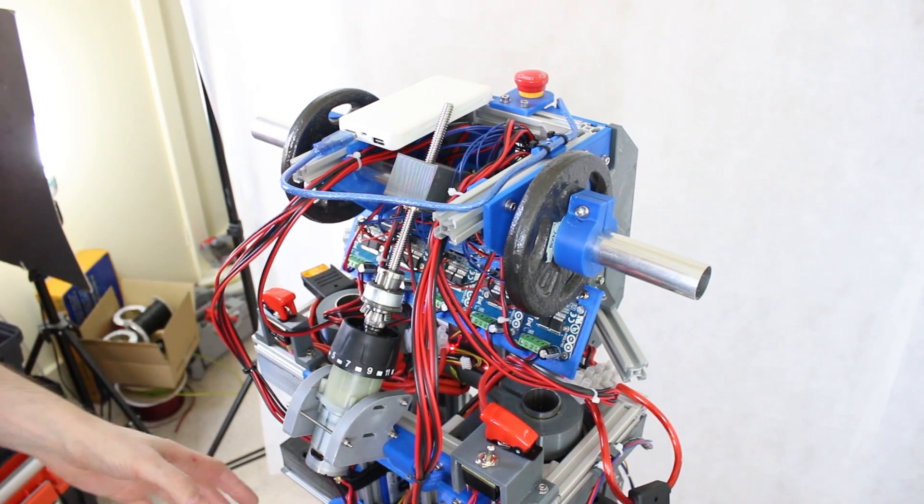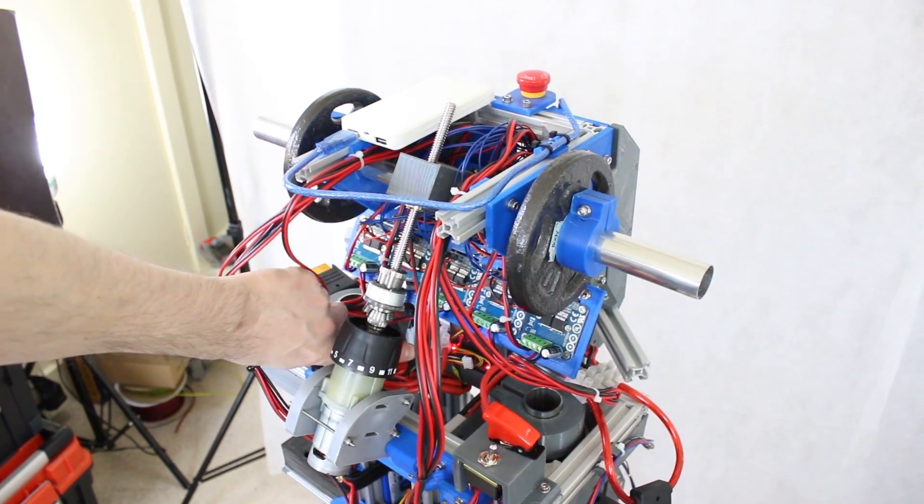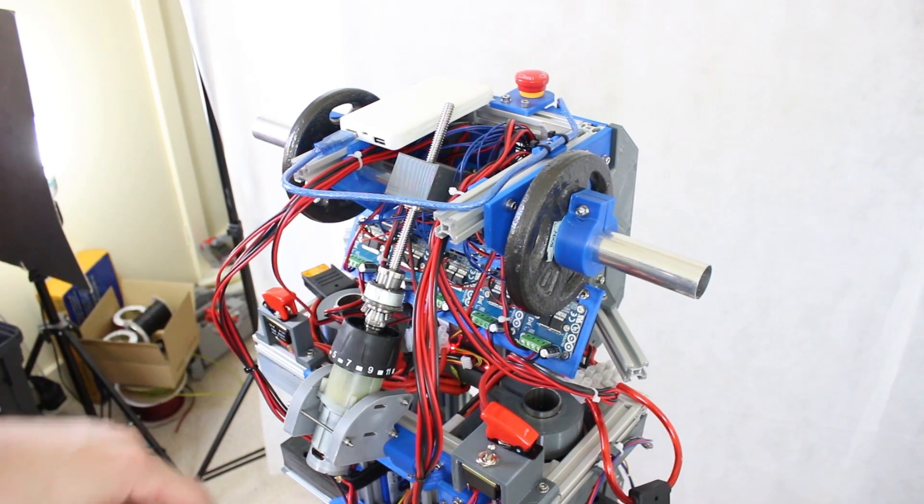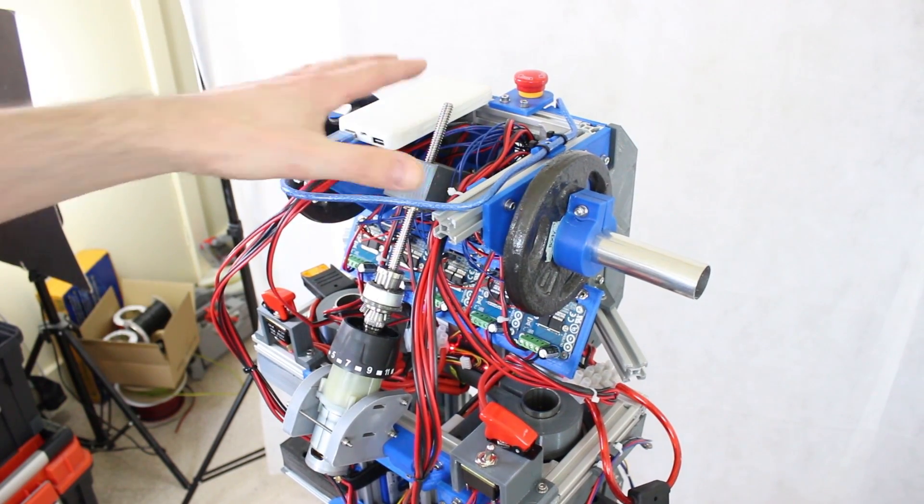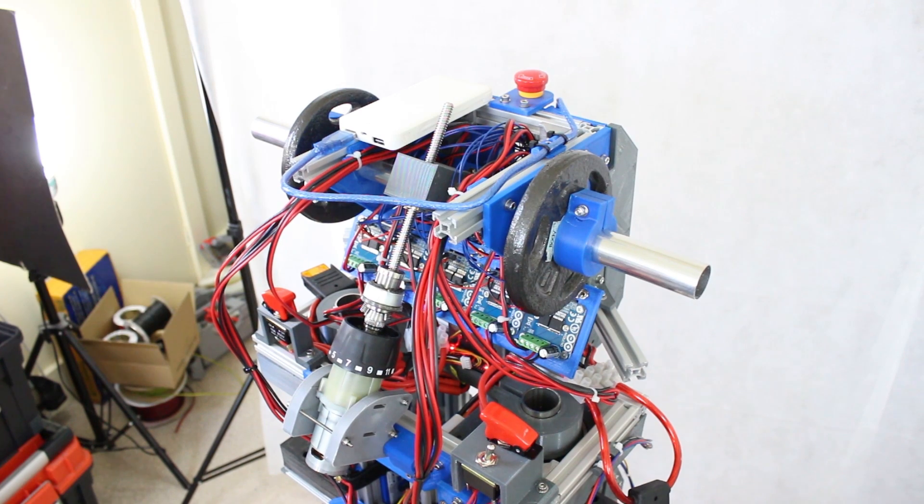So basically we're going to use the IMU we put in the body last time. That you can maybe just see down there flashing away. And that's going to drive that position to try and keep the robot stable back to front. The same as it does side to side.